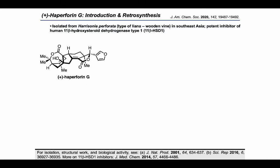Aside from its astonishing level of complexity, the target also possesses desirable biological activity in that it's a potent inhibitor of human 11-beta-hydroxysteroid dehydrogenase type 1, which is an enzyme that controls the level of cortisol in cells. Applications stemming from inhibition of this enzyme with small molecules have been explored in the perspective in J. Med. Chem.